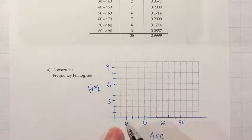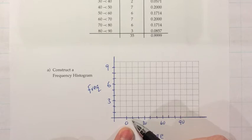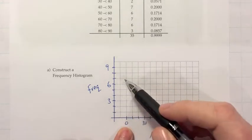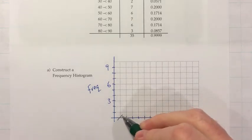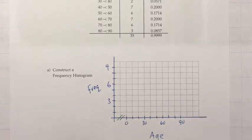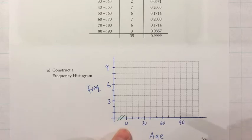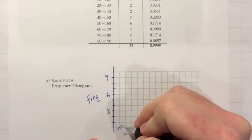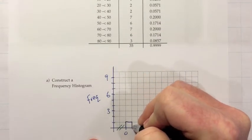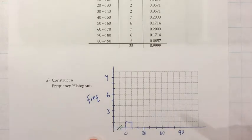When moving the 0 away from its normal position at the corner, we make a double slash mark to indicate a break in scale — you're supposed to do that whenever you move a number out of its normal place. Once the scale is set up, the rest is just drawing the bars. Our first class goes from 0 to 10 with a height of 1, so we draw a bar from 0 to 10 that goes up 1 unit high.